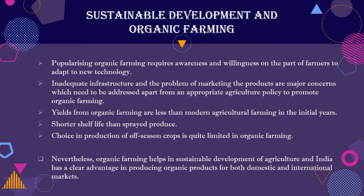Proper infrastructure development and marketing are needed to promote organic farming. The demerit is that organic farming yield is not productive in initial years. Farmers are used to new technologies and pesticides which give higher yields, so obviously, why should they adopt organic farming when they are getting higher yields from conventional methods? That is why organic farming has not been so successful in the early stages.